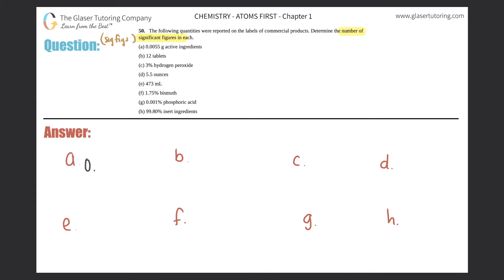For letter a, let's get to it: 0.0055 grams. So the first rule of thumb is all non-zeroes, which are numbers one through nine, are significant, meaning that they count. Here I have a five and a five, so they will always count. Now I have my zeros, so I gotta worry about them.